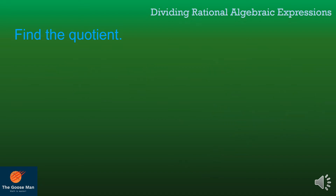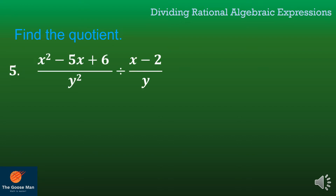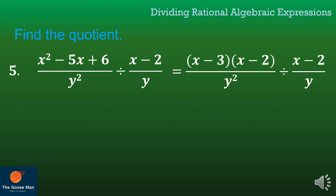Let's move on to the next example: x squared minus 5x plus 6 all over y squared, divided by x minus 2 all over y. Before getting the reciprocal, I'll factor first. The factors of x squared minus 5x plus 6 are (x minus 3)(x minus 2), since this is a trinomial. The factors of 6 are 3 and 2, and since the middle term is negative 5x — negative 3x plus negative 2x equals negative 5x — these are the factors of the quadratic trinomial.